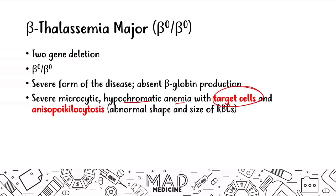Anisopoliocytosis just means you have abnormal shape and size of red blood cells — recall our video about pathologic forms of red blood cells. These patients are going to require blood transfusions. Now, this is what a target cell is going to look like. As you can see, it looks like you have a target in the red blood cell — hence it is named a target cell. Not named after the store, but it just looks like a target.